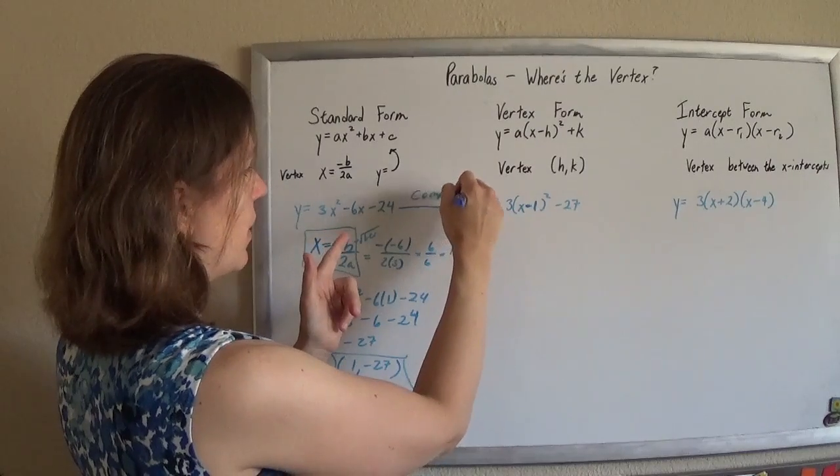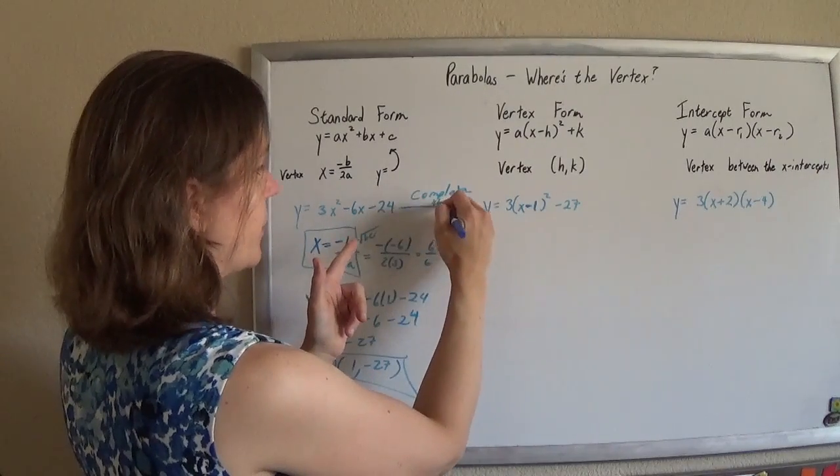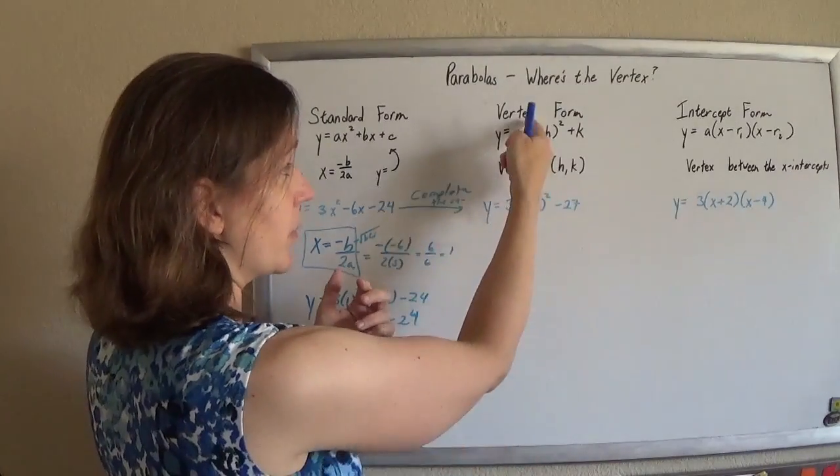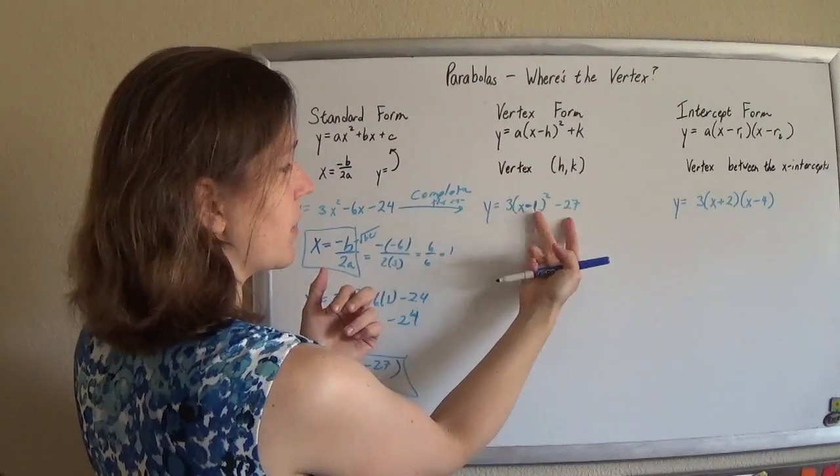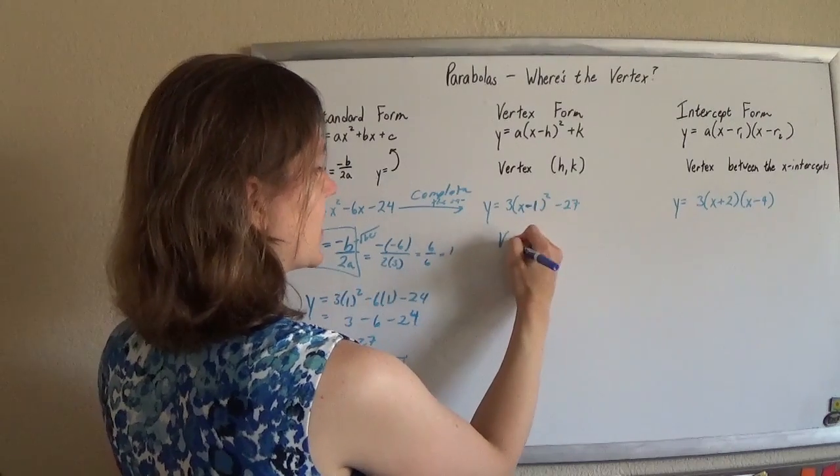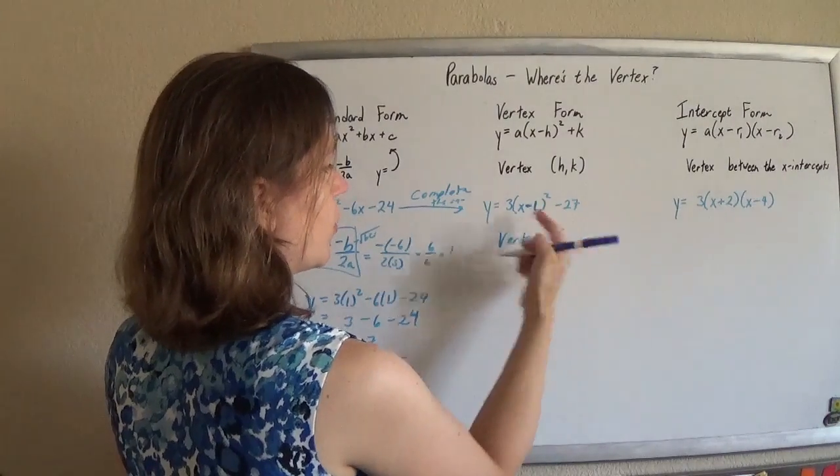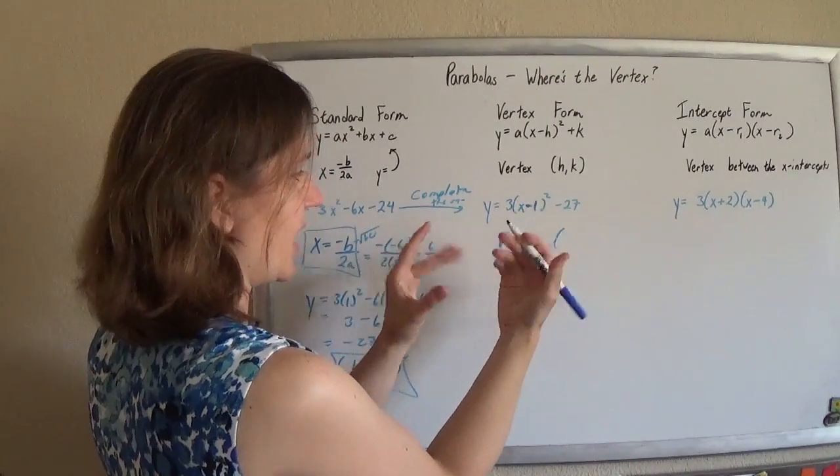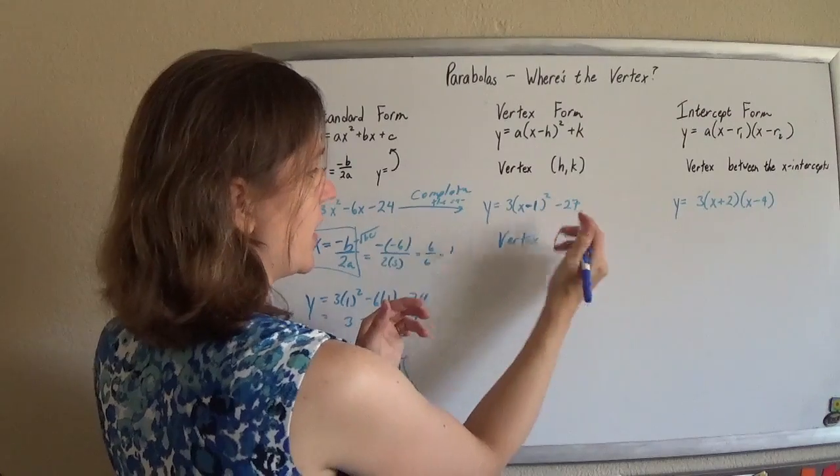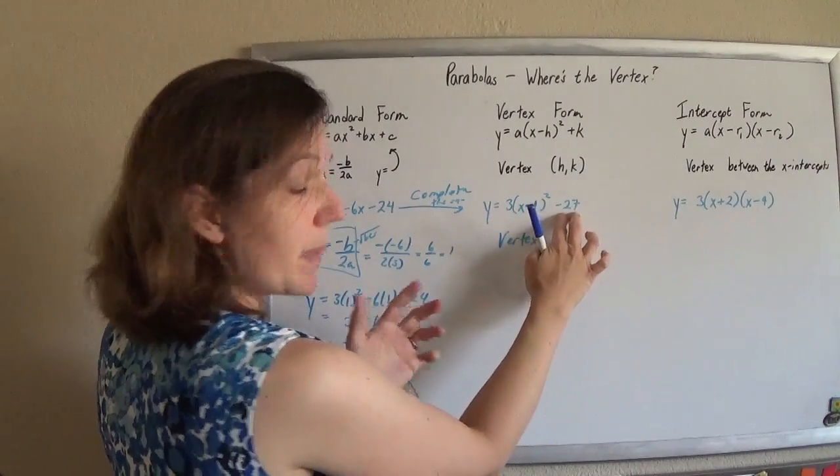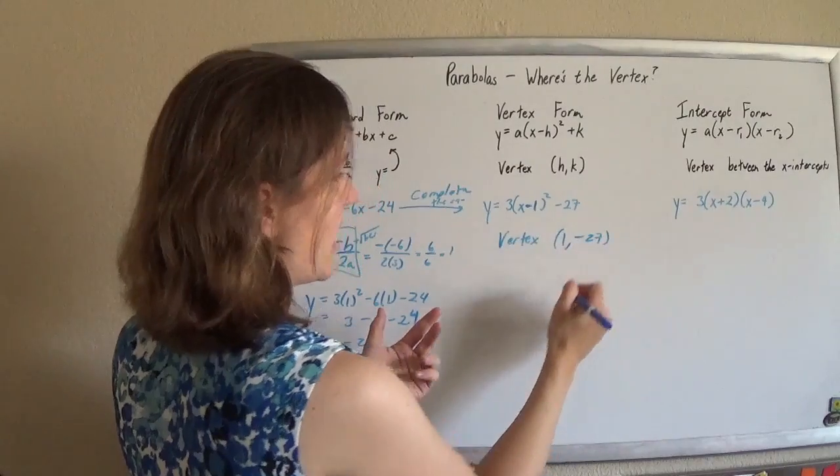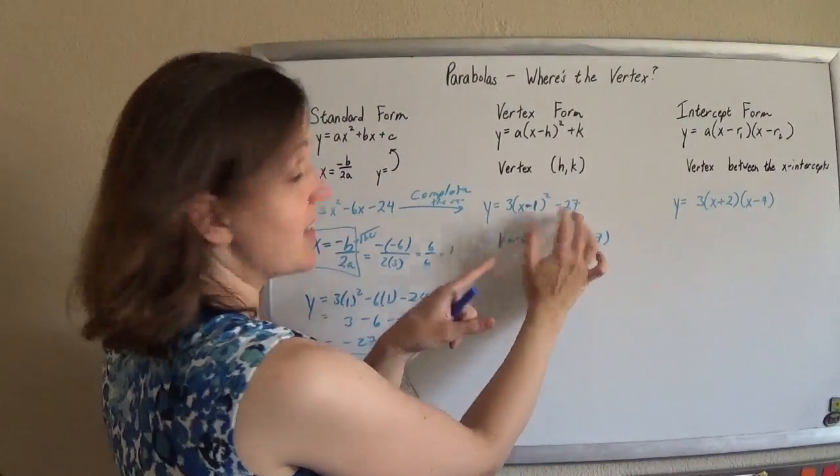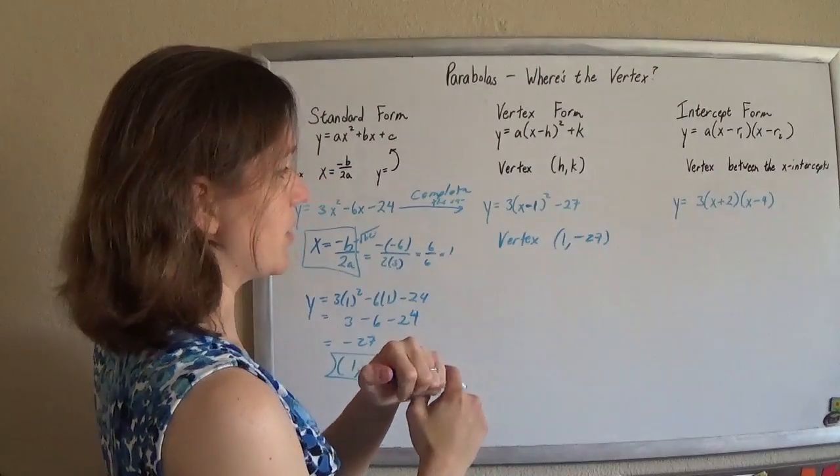If it was presented to you with the square already completed, this is my favorite form, the vertex form. You just pluck the vertex right out of that. Your vertex in this one will be 1. You have to change the sign. When it's grouped in with transformations, you're always changing the sign to kind of undo it. So it's negative 1 there, so it's positive 1 here. But the minus 27 is going to stay minus 27. That's just tacked on the end. It's like the y's were that, and now they're 27 less than that.